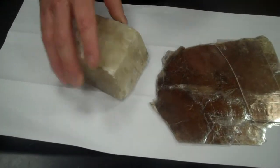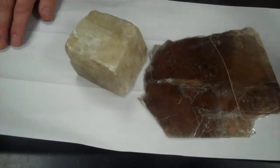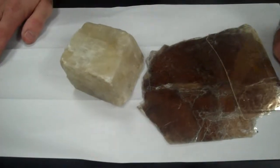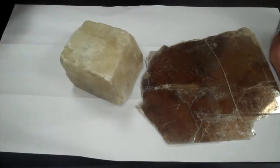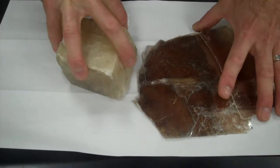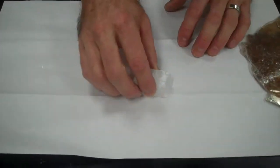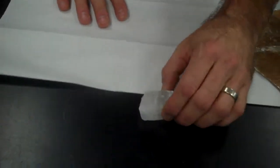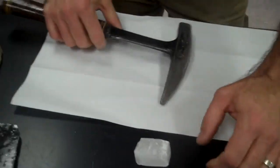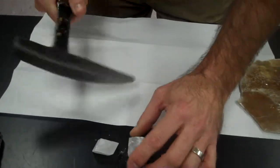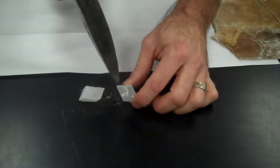The next is whether a mineral cleaves or fractures. So cleavage and fracture are how the mineral breaks. And I'll use this as an example. You should always wear goggles when you're using a hammer. So we have this mineral calcite. And when I break it,